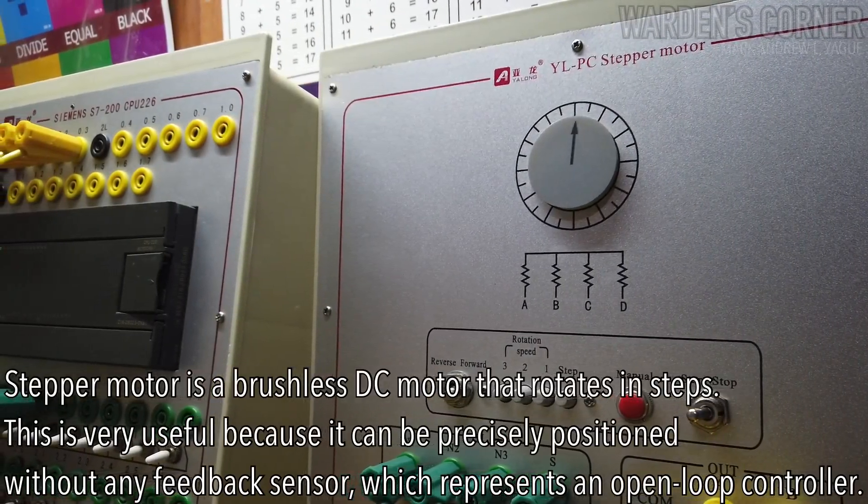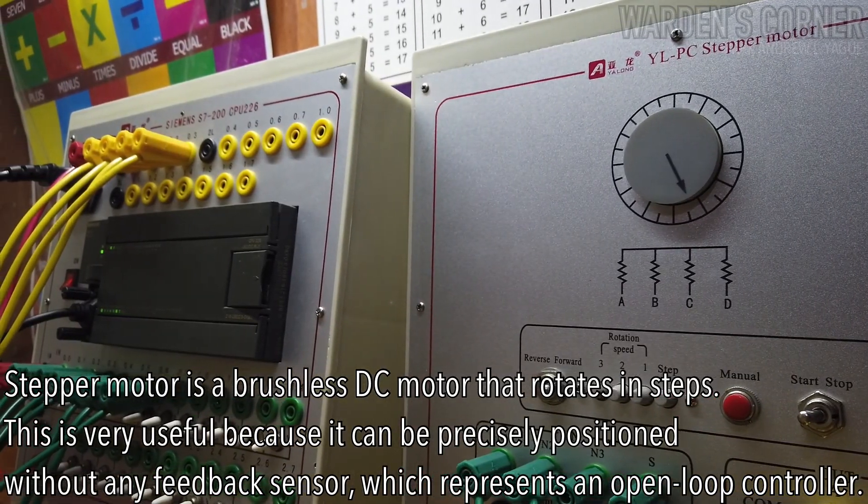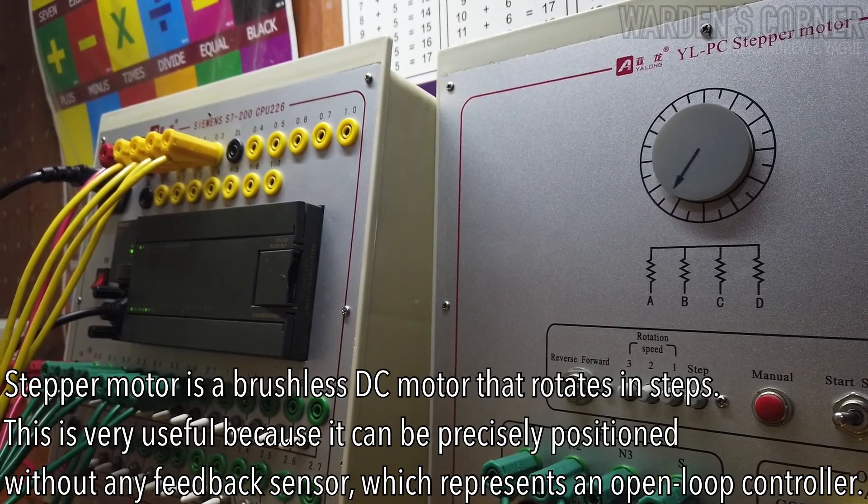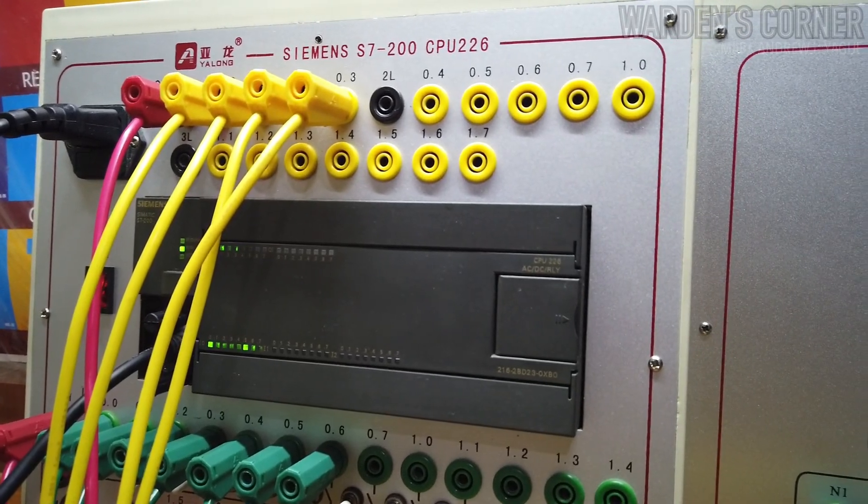Stepper motor is a brushless DC motor that rotates in steps. This is very useful because it can be precisely positioned without any feedback sensor, which represents an open-loop controller.